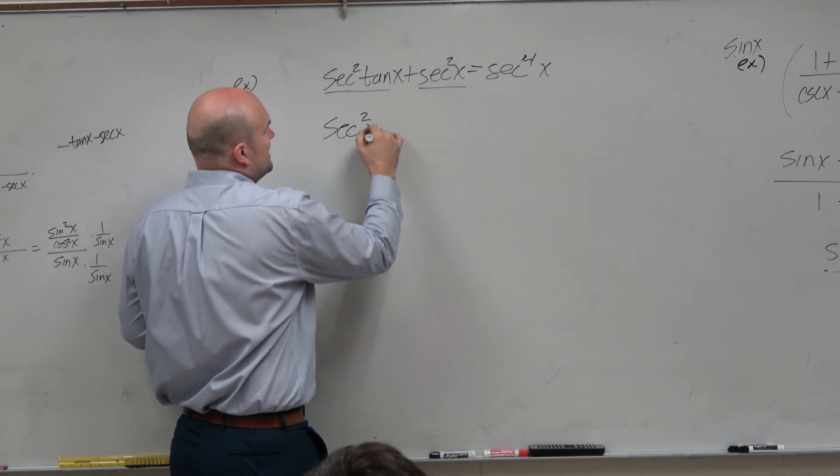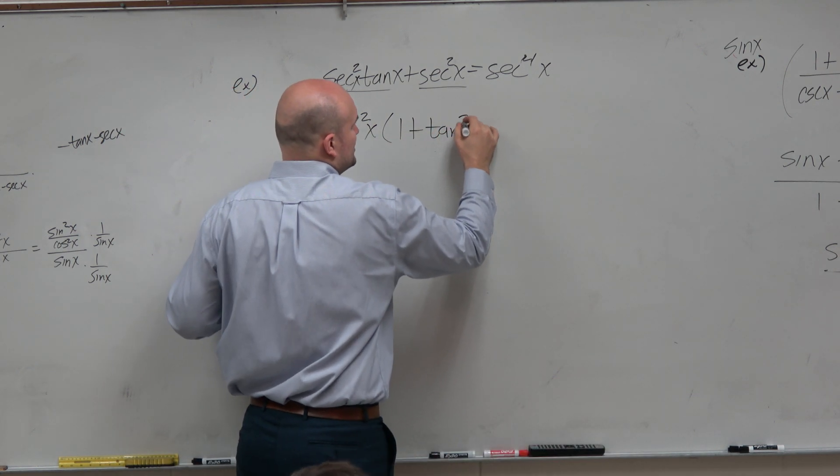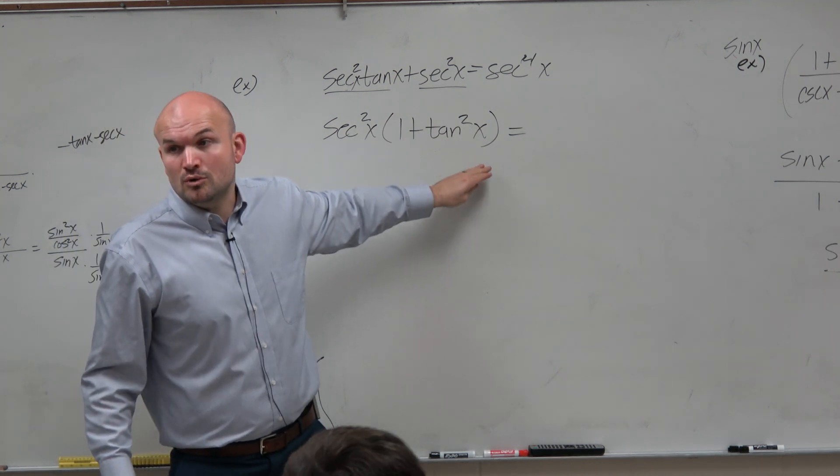So if I factor out a secant of x, I'm left with a 1 plus tangent squared of x. And then I recognize, a tangent squared.